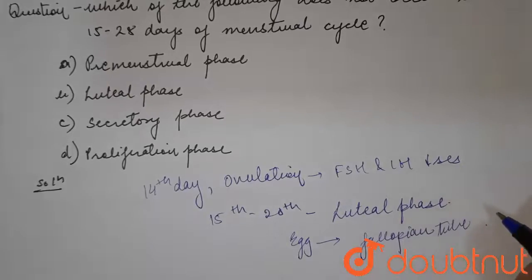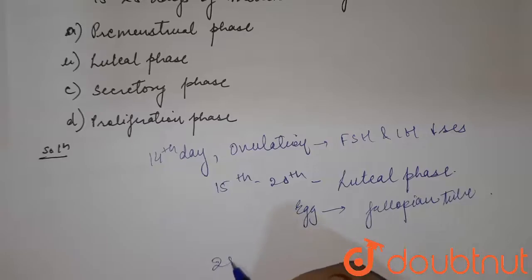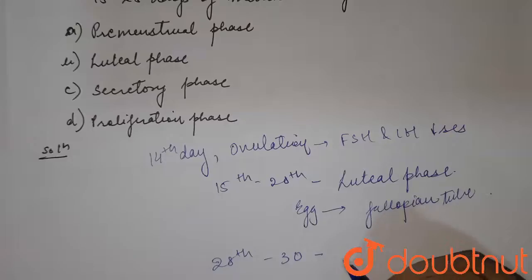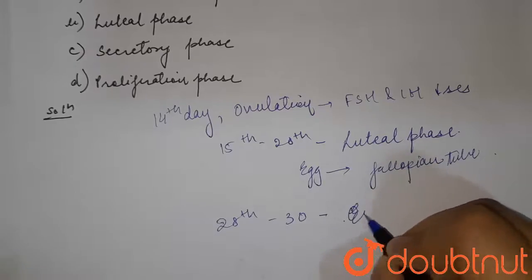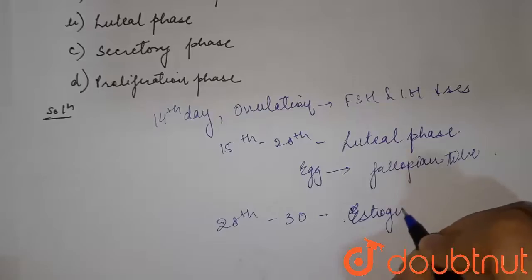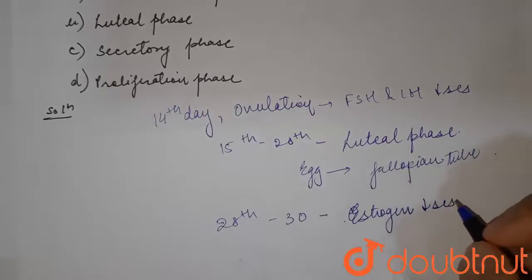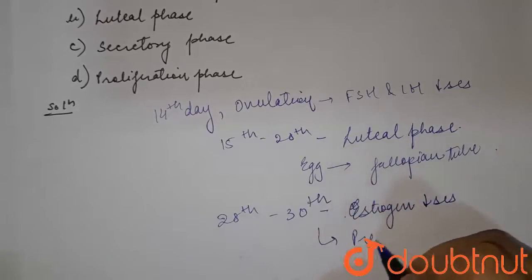From around 28 to 30 days, there is the premenstrual phase. In that phase, estrogen decreases, and hence LH and FSH increase. This is known as the premenstrual phase.